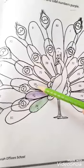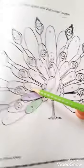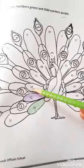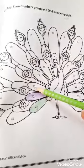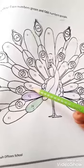The next number is 18. And in 18, look at the ones place. Number 8. 8 is an even number or an odd number? Yes, 8 is an even number. So we will color it green.